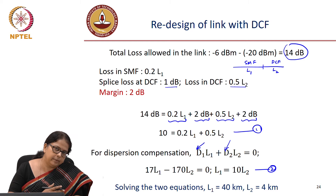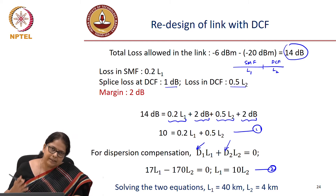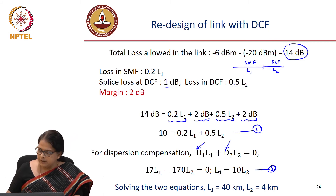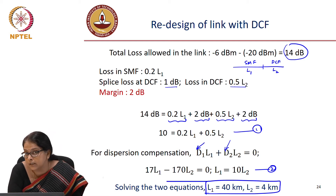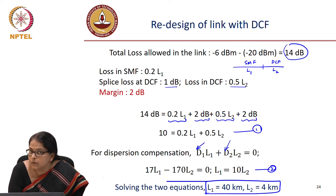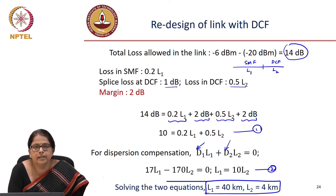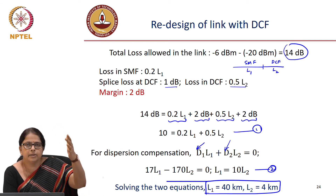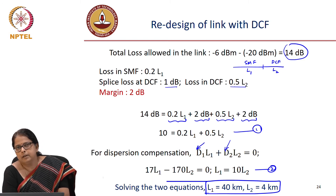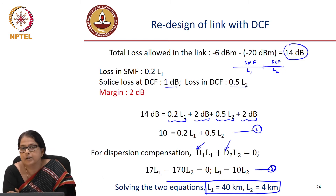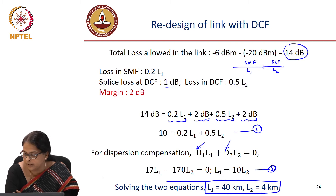So L1 is 40 km and L2 is 4 km. From 25 km, which was the span allowed without dispersion compensation, with dispersion compensation using this fibre we are able to make our span 40 km. We still cannot do 60 km even though the loss budget would allow it, because we had to use up that extra loss budget to support the DCF.